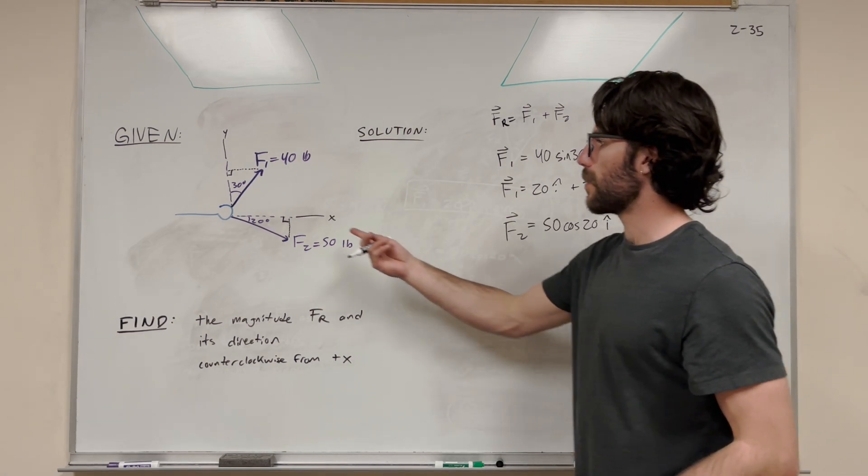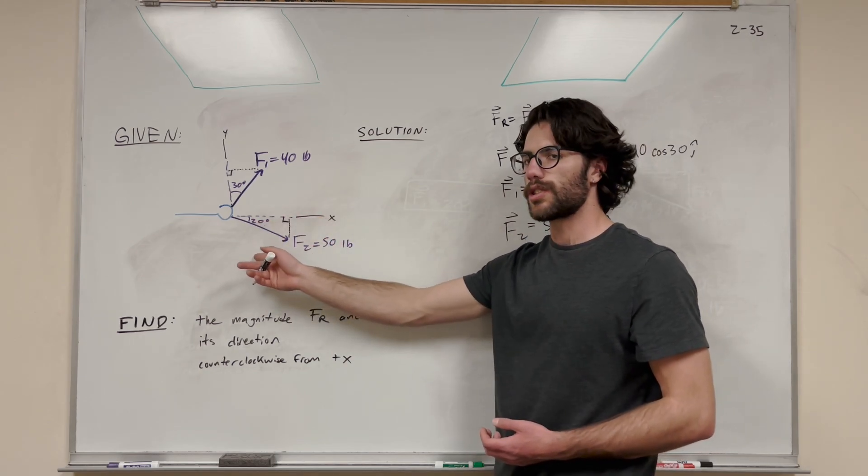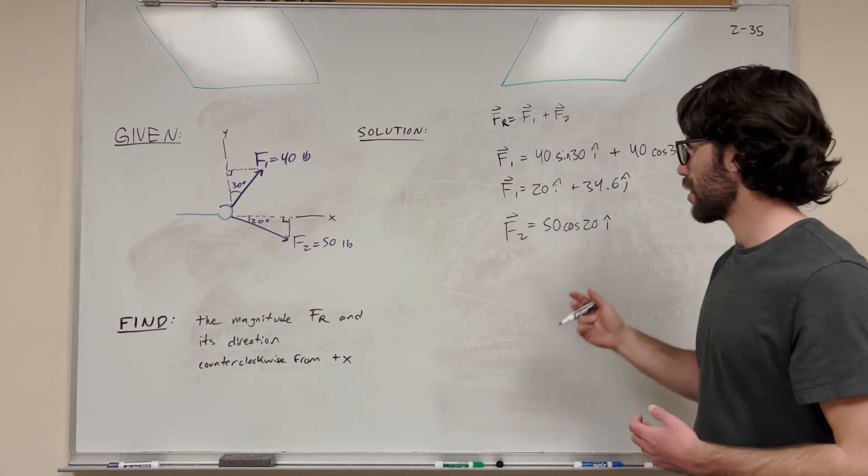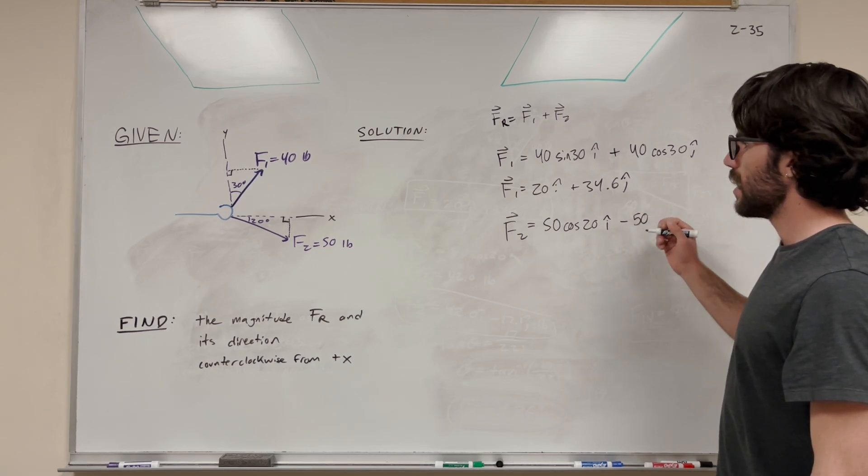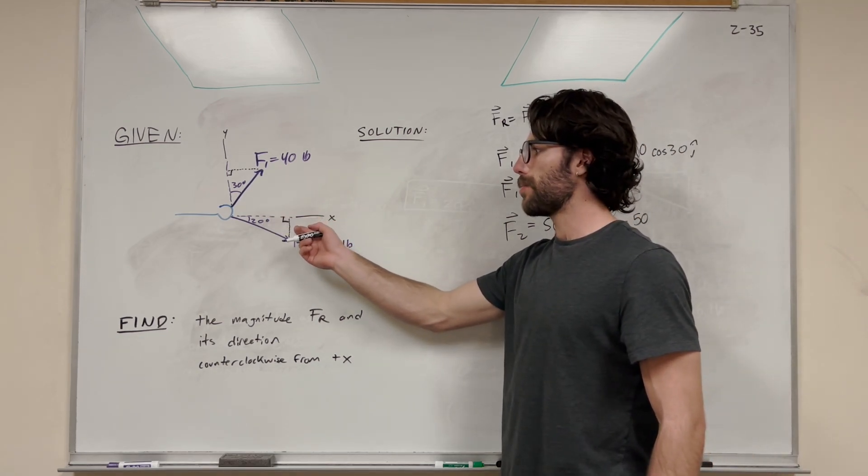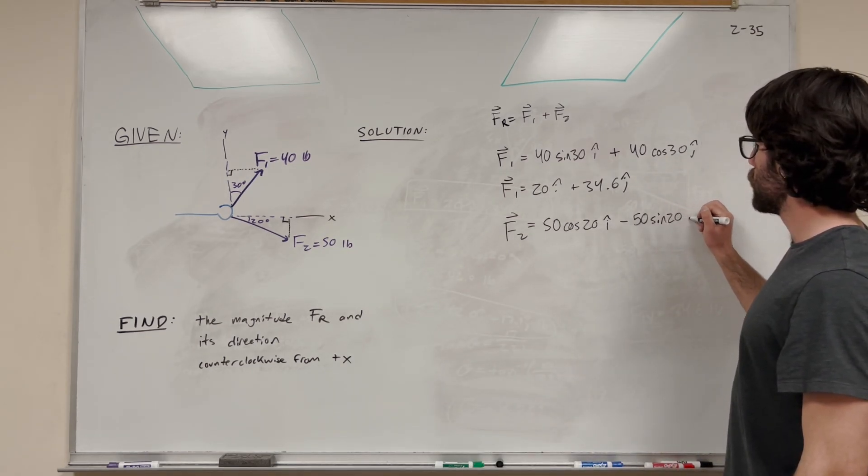Then, let's do our y component. Well, this time our y component is in the negative direction. This vector is in quadrant 4, which means that our y component is going to be the negative part. So we need to subtract 50. And then we're going to use a similar thing. It's opposite, so we're going to use sine, 50 sine of 20 j.